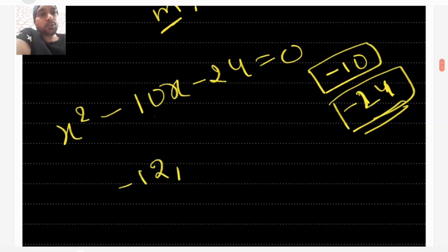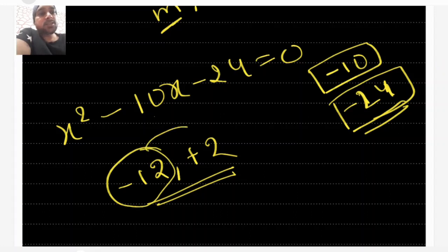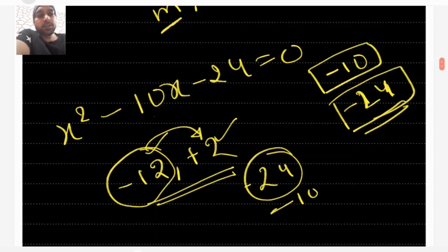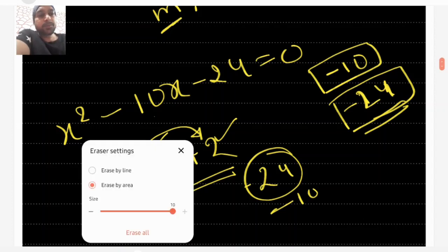So -12 and +2 are such numbers. When you multiply -12 by 2, you get -24. And when you add +2 and -12, you get -10. So these are the two numbers.